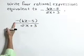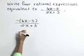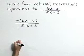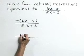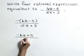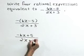To get a second form, let's distribute that negative sign through the parentheses in the numerator. So a second equivalent form is negative 6x plus 5 over 2x plus 3.